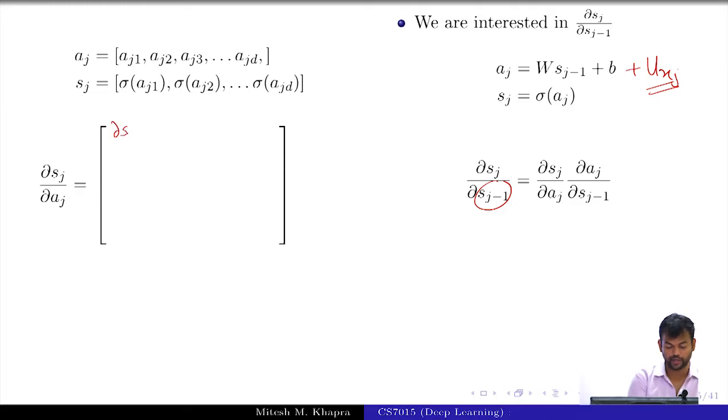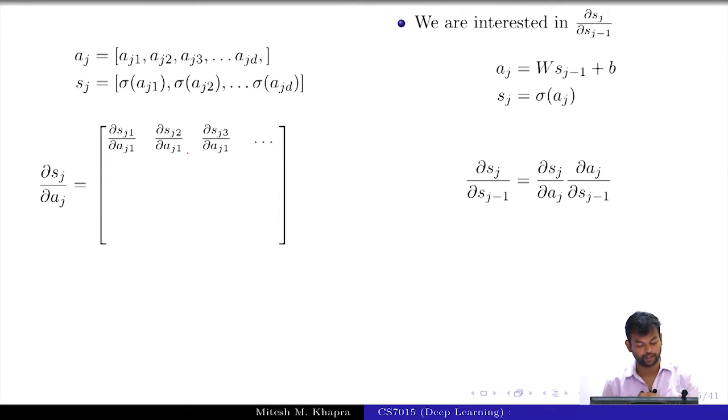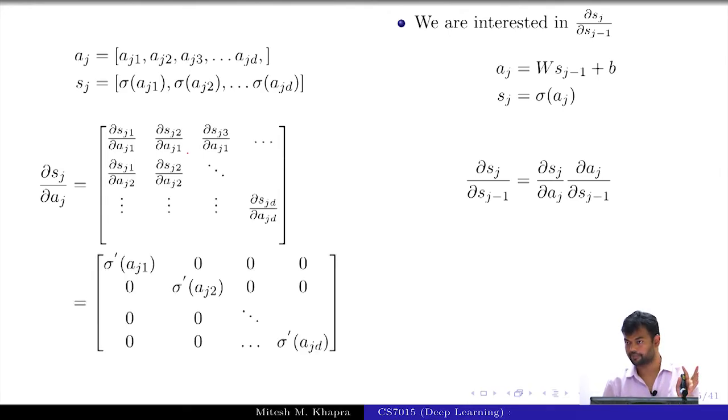What is the first entry? It is going to be ∂s_{j1}/∂a_{j1}. What is that going to be? It will be something, but let us look at the second entry ∂s_{j2}/∂a_{j1}. What is this going to be? Zero. Zero because it does not depend on that. So, now you can see how the full matrix will look like? All the off diagonal elements are going to be zeros and the diagonal elements are going to be sigma primes. Everyone fine with this? So, this matrix I am going to just call it as diagonal σ'(a_j).